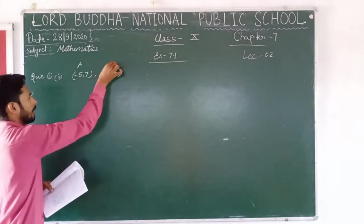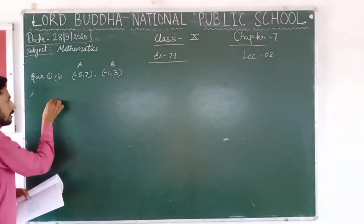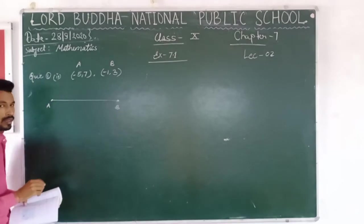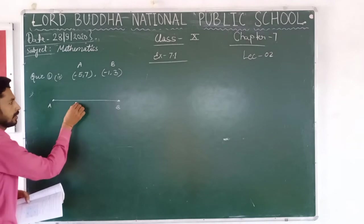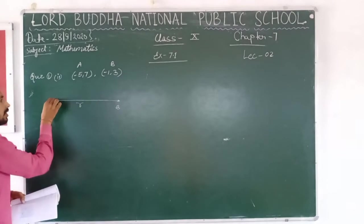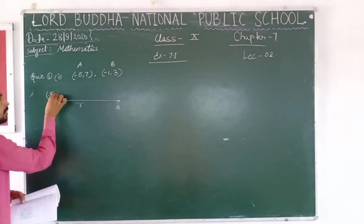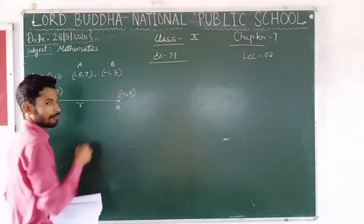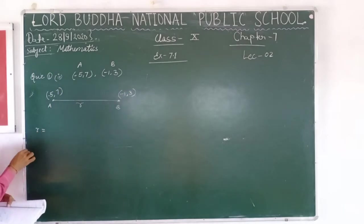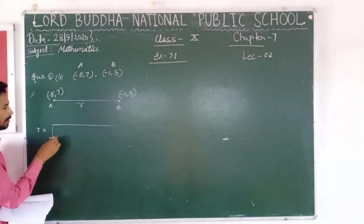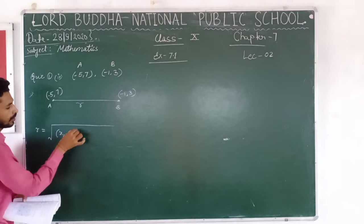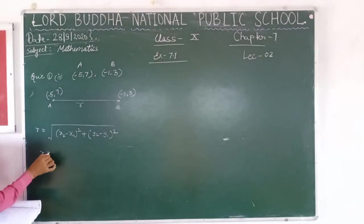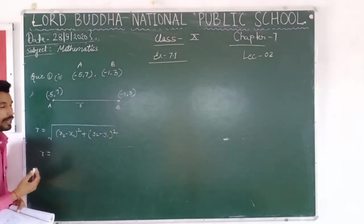Suppose this is point A and the next point is B. The coordinates of point A are minus 5 comma 7, and the coordinates of point B are minus 1 comma 3. According to the distance formula, r equals to square root of (x2 minus x1) whole square plus (y2 minus y1) whole square. Now put the values of x1, y1, x2, and y2.